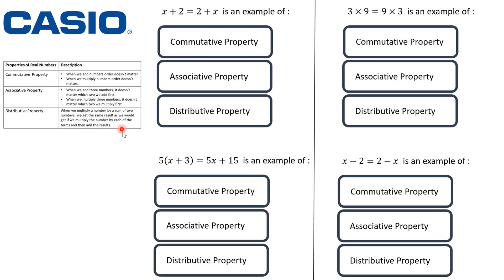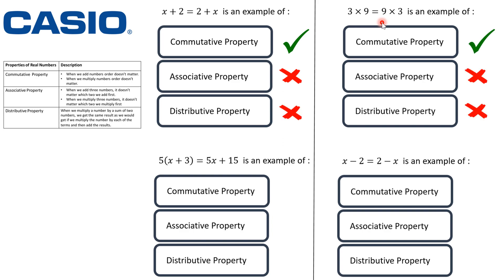An application on properties of real numbers. Take two minutes to answer the following questions. Question one: x plus 2 equals 2 plus x — this is an example of commutative property. Question two: 3 times 9 equals 9 times 3 — also commutative property. Question three: 5 times (x plus 3) equals 5x plus 15 — this is an example of distributive property. Question four: x minus 2 equals 2 minus x — this is neither of the above.